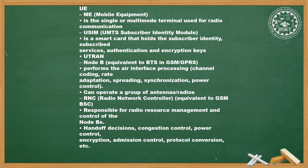The UE user equipment interface has Mobile Equipment (ME), which is the single or multi-mode terminal used for radio communication. USIM — the UMTS Subscriber Identity Module — is a smart card that holds the subscriber identity, subscribed services, and handles authentication and encryption.